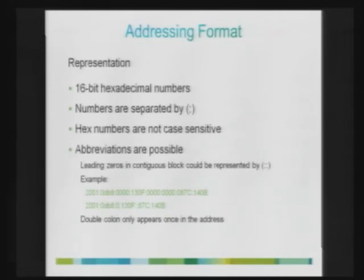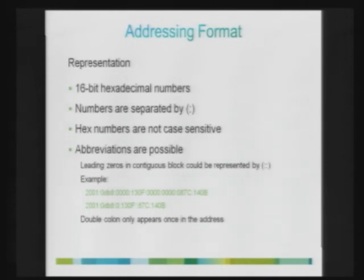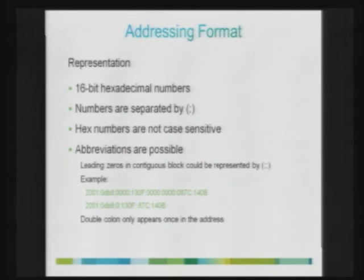For IPv4 we use dotted decimal notation, but with IPv6 the addressing format is colon hexadecimal notation — because v6 is 128 bits. The 128 bits are separated into 16-bit hexadecimal numbers separated by colons. You can abbreviate the address: if there are contiguous zeros, they can be replaced by a double colon. However, the double colon can appear only once in a single address, otherwise the system cannot reinsert zeros at the appropriate places. In each block, leading zeros can be omitted but not trailing zeros.